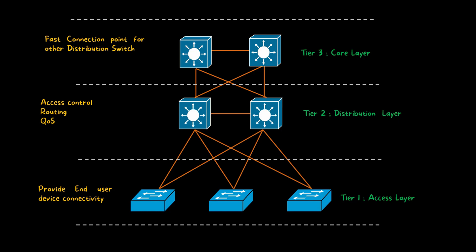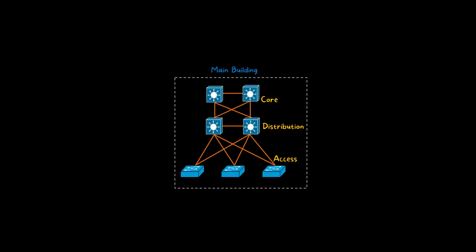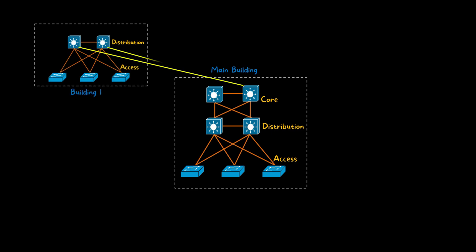Now let's see how we can create a campus network. This is the main building of Joy Ice Cream Company, which contains an access layer, distribution layer, and core layer. For the first office building, from its distribution layer we take the uplink and connect to the main building's core network. From each distribution switch we make two connections — the first connection goes to core switch one and the second connection goes to core switch two — so each distribution switch cross-connects to both core switches.